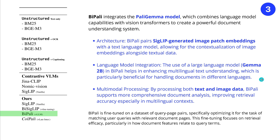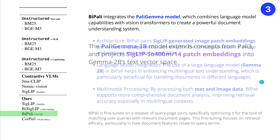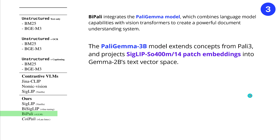This helps BiPali in enhancing multilingual text understanding, which is especially helpful if you have different languages. And then we have this multimodal processing — text and image data — and BiPali supports a more comprehensive document analysis. PaliGemma model itself extends the concept from Pali 3 and projects our SigLIP patch embeddings into the Gemma 2B text vector space.